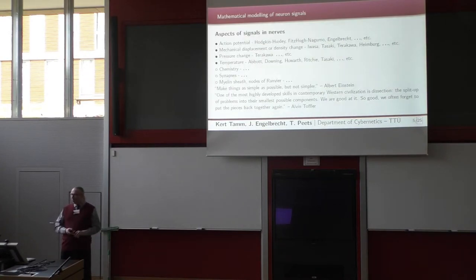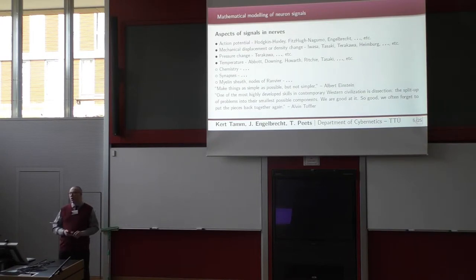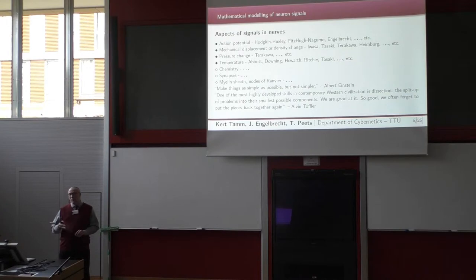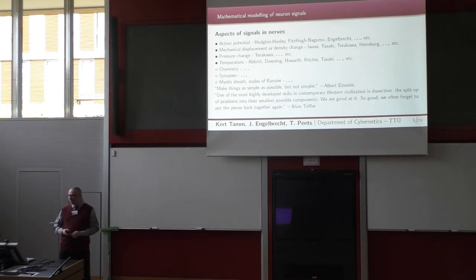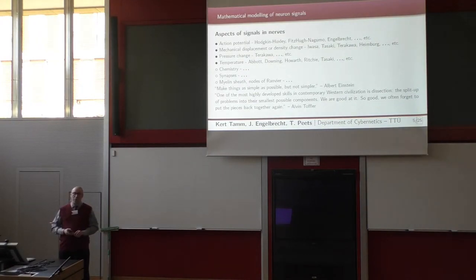What aspects of nerve pulses are we going to take into account? First of course is the action potential, which is what people usually think about when they talk about nerve pulse propagation, with a number of well-established models. Then there is mechanical displacement and density changes, with a number of experimental observations and some theoretical models. Then there is pressure change in axoplasm, measured by Terakawa, Tasaki, and others. And then there are temperature changes during and after nerve pulse propagation, with quite a number of experimental observations.